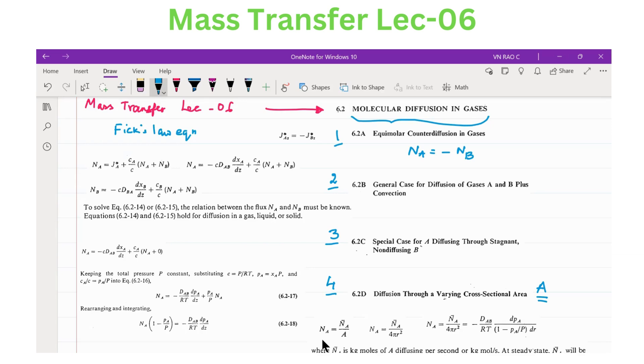When I write general in the second case, that means we consider NA and NB together. We write an equation for NA in terms of NA and NB as well as molecular equation. That means molecular transport plus convective transport together, we will write an equation. This equation is shown here. NA equals molecular diffusion plus convective.